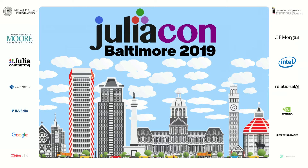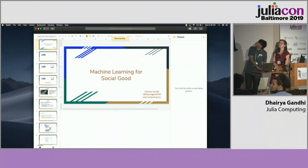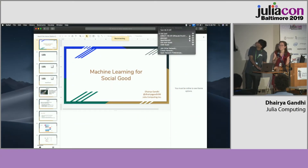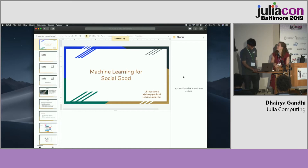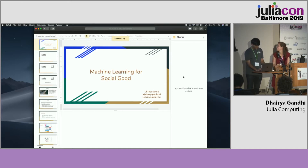I think there's an AV issue. All right, so now that AV is working, this is Dheria Gandhi — Machine Learning for Social Good.